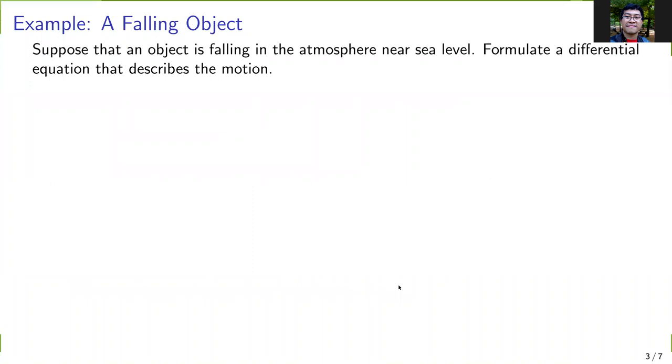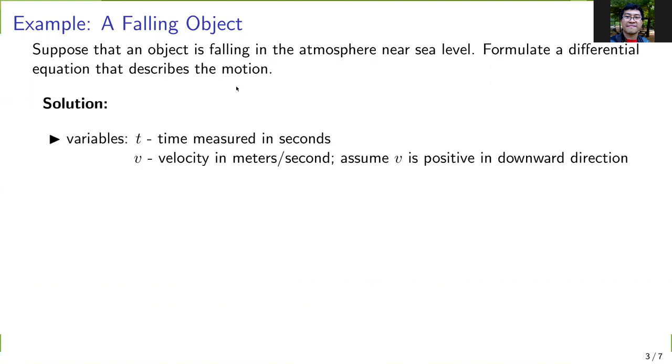Let us consider an example. Suppose you have an object falling in the atmosphere near sea level. Formulate a differential equation that describes the motion. First, let us identify and set the variables.